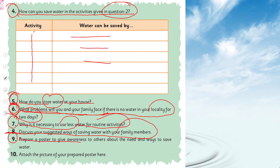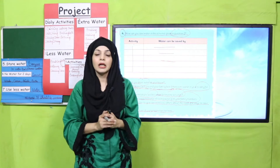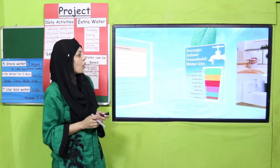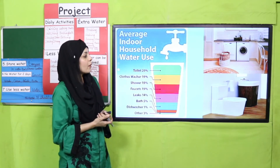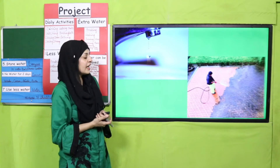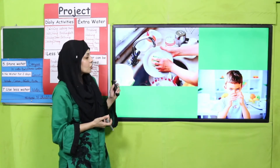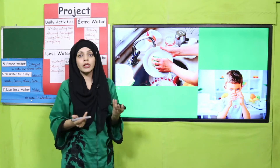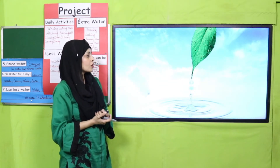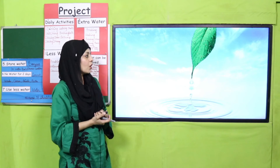Question eight: discuss your suggested ways of saving water with your family members. Then prepare a poster to raise awareness to others about the needs and ways to save water. Attach the picture of your prepared poster in your book. This will be done as homework. We also looked at pictures showing where water is wasted — toilet, laundry, brushing teeth, shower, leakage, cleaning driveways, and washing dishes. This is your project; you will do it as homework.